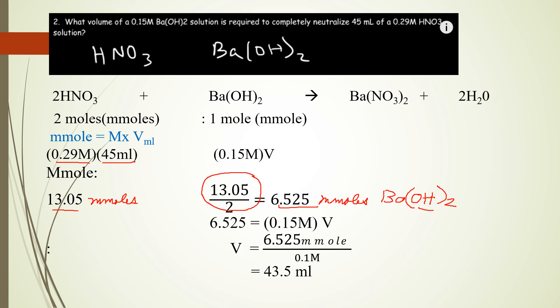Now, if I multiply, this is millimoles. You have to remember that molarity times volume is millimoles. So this is volume that is required for barium hydroxide to completely neutralize the nitric acid. So this is our unknown. This is what we need, 6.525 millimoles.